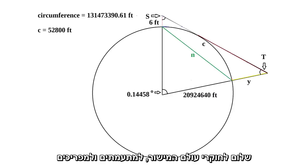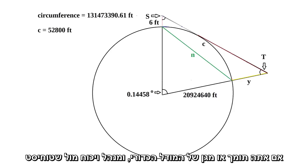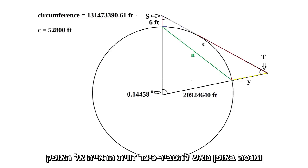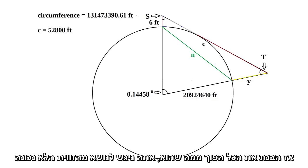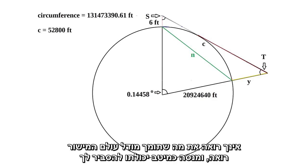Hello, flat earth researchers, debaters and debunkers. If you are a defender of the globe arguing with a flat earther and desperately trying to explain how the angled view to the horizon is proof that we are on a spinning ball earth, then you have got it all wrong. You are approaching it from the wrong angle. You are not seeing what the flat earther is seeing and is trying his best to explain to you.